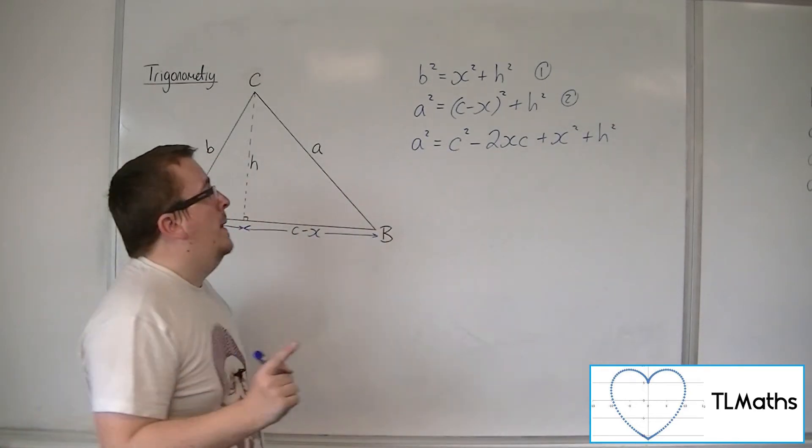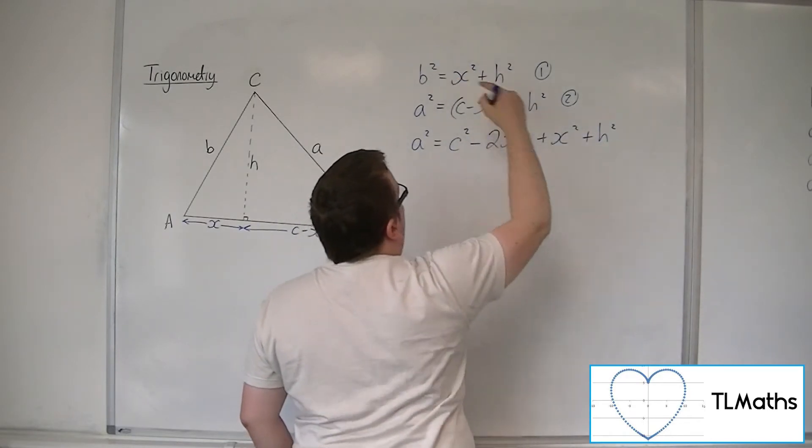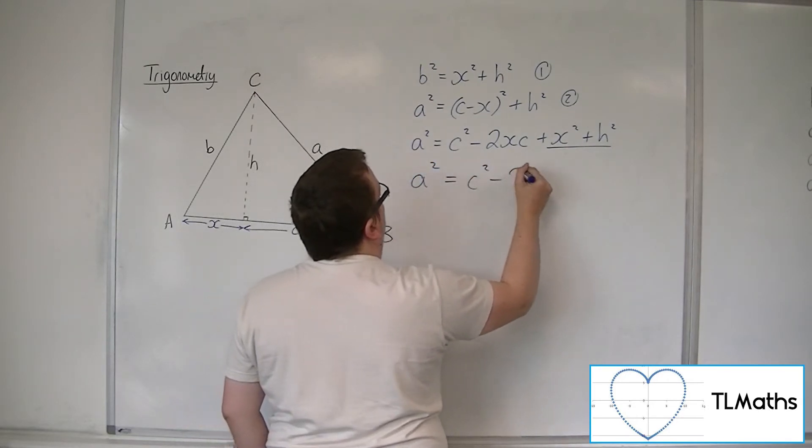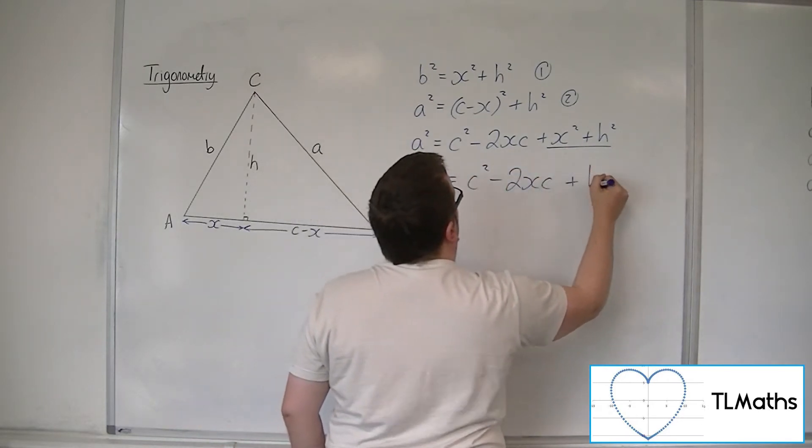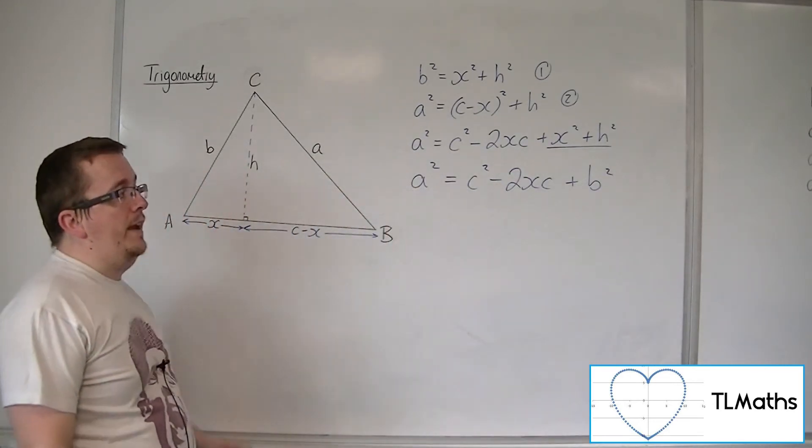Now we know that X squared plus H squared from equation number one is just B squared. So A squared must be equal to C squared minus 2XC plus B squared by substituting equation one into equation two.